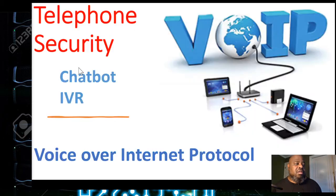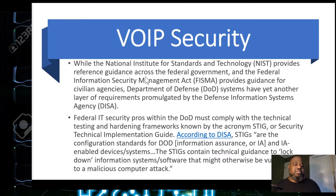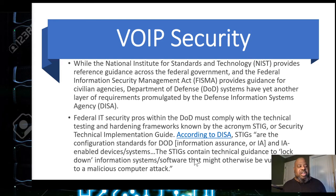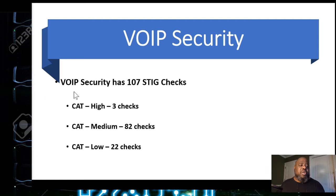We're going to talk about the checks for telephone systems, which include chatbots, IVR, voice over IP, or anything you're doing over your phone system. For VoIP security, we look at NIST — National Institute of Standards and Technology — which reports to FISMA, Federal Information Security Management, the DOD, Department of Defense, and the DISA STIG checks. These are hardening security checks for DOD that harden the information system or software from malicious attacks. In the VoIP STIG, there are 107 checks: 3 highs, 82 mediums, and 22 lows.